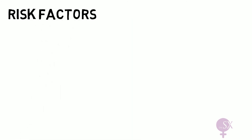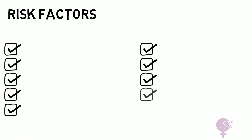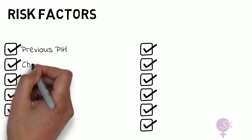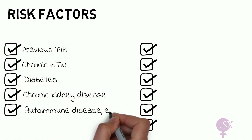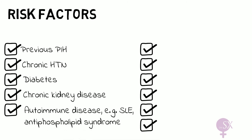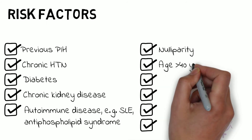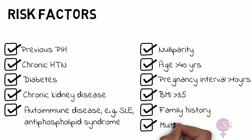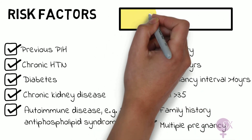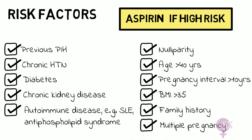Risk factors for preeclampsia include previous hypertension in pregnancy, chronic hypertension, diabetes, chronic kidney disease, autoimmune disease such as SLE and antiphospholipid syndrome, nulliparity, age over 40, a pregnancy interval of more than 10 years, BMI greater than 35, a family history of preeclampsia, and multi-fetal pregnancy. Importantly, in high-risk pregnancies with multiple risk factors, aspirin can be given as prevention at either 75 or 150 milligrams daily.